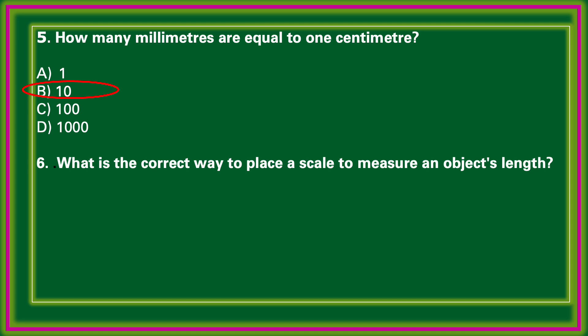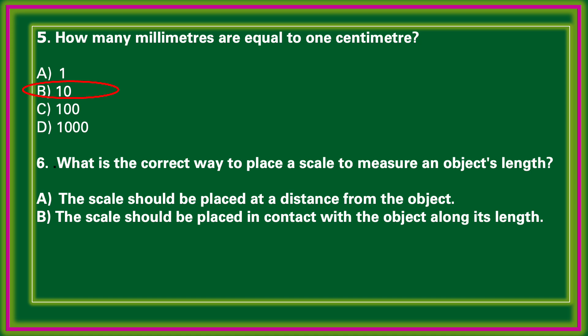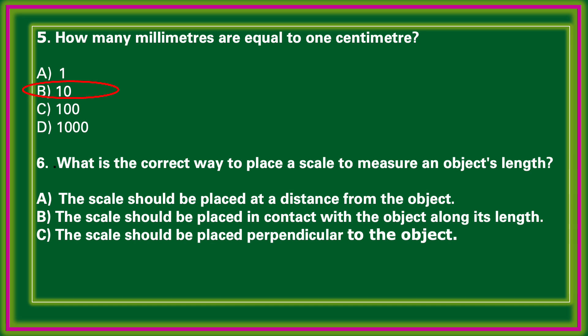What is the correct way to place a scale to measure an object's length? Options: the scale should be placed at a distance from the object; the scale should be placed in contact with the object along its length; the scale should be placed perpendicular to the object. The correct answer: the scale should be placed in contact with the object along its length.